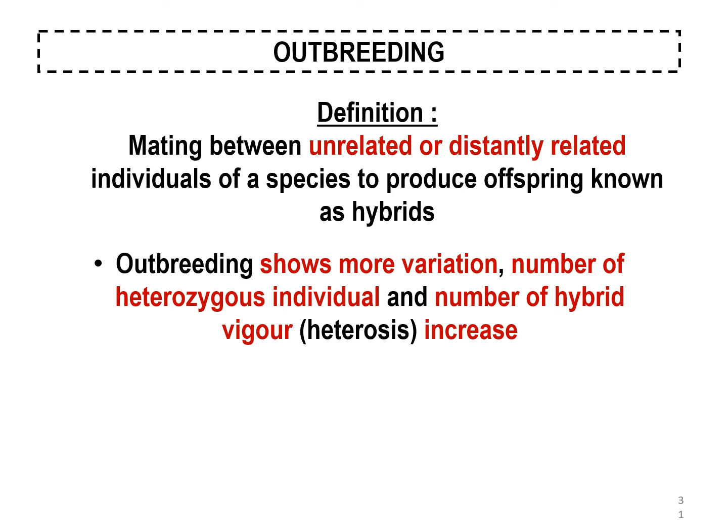Outbreeding is a mating between unrelated or distantly related individuals of a species to produce offspring known as hybrids. Unlike inbreeding, outbreeding involves unrelated or distantly related individuals — for example, harimau kumbang and singa (leopard and lion), which are distantly related even though they are in the same family and genus. Outbreeding shows more variation, increases the number of heterozygous individuals, and increases hybrid vigor.